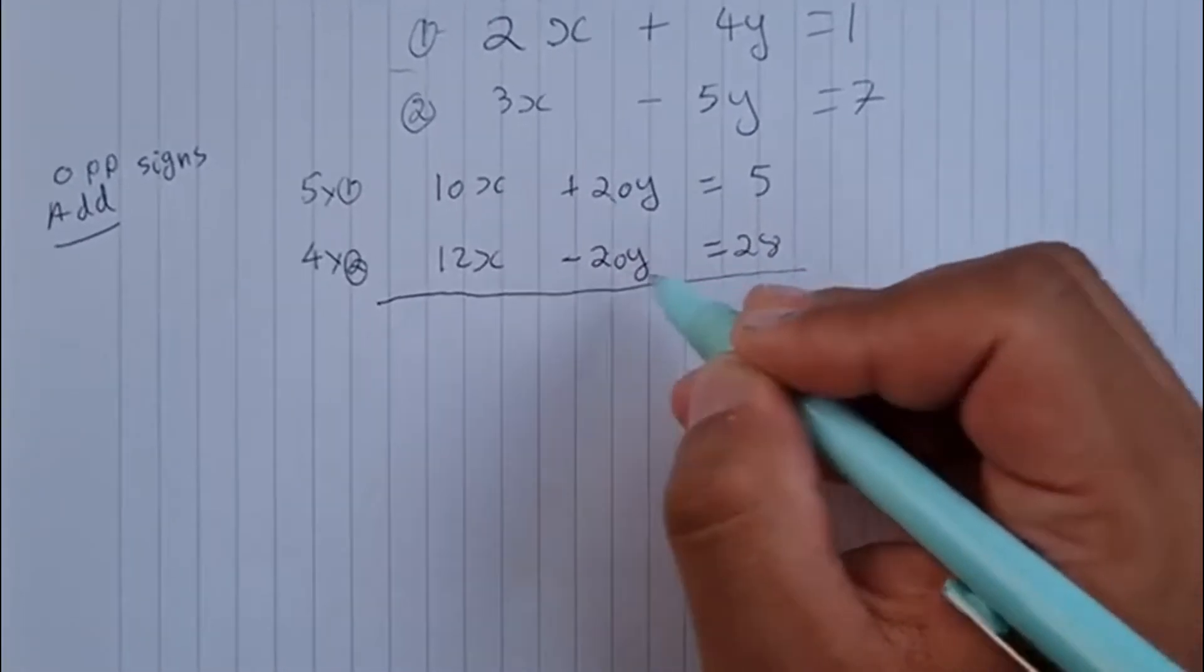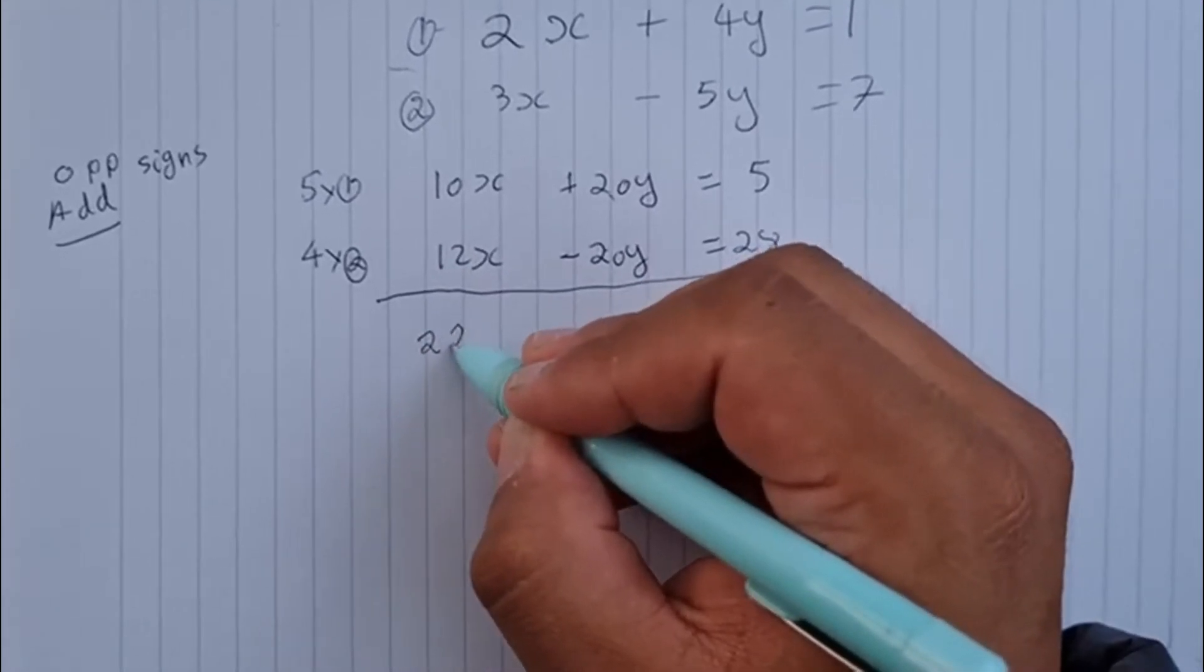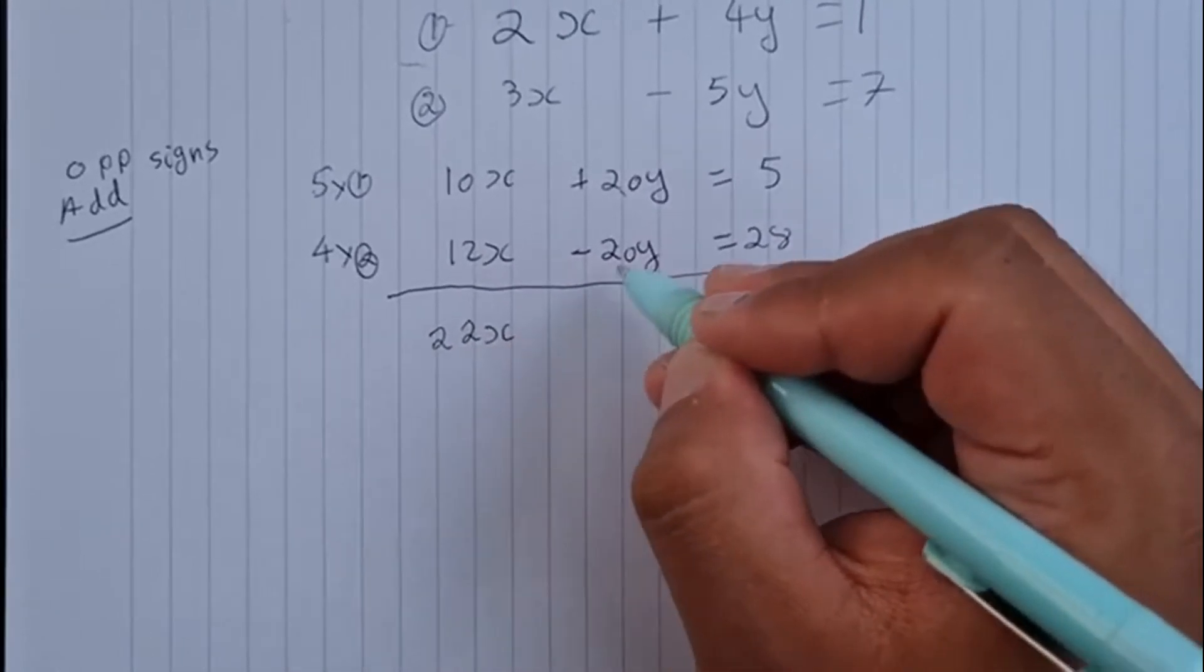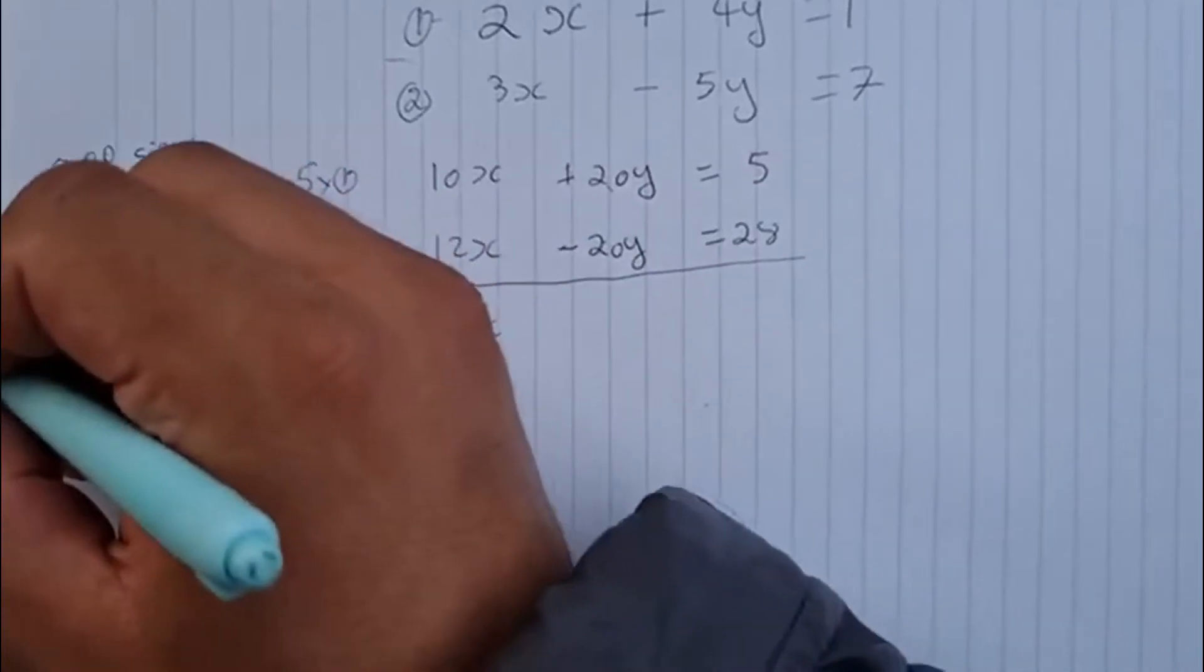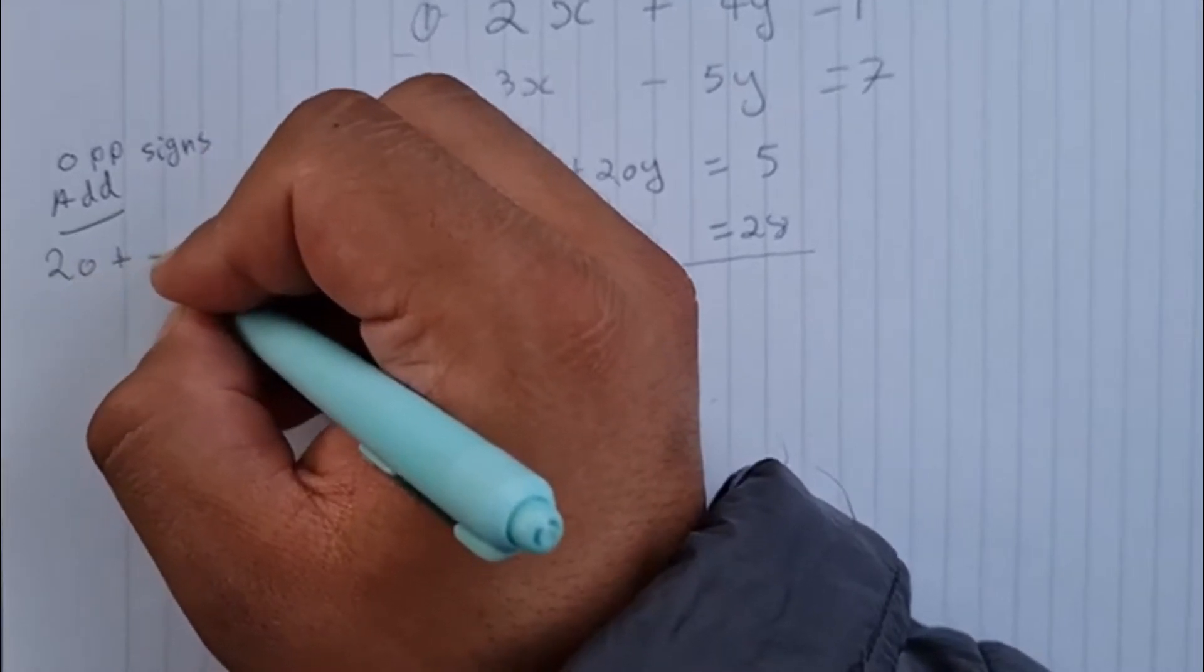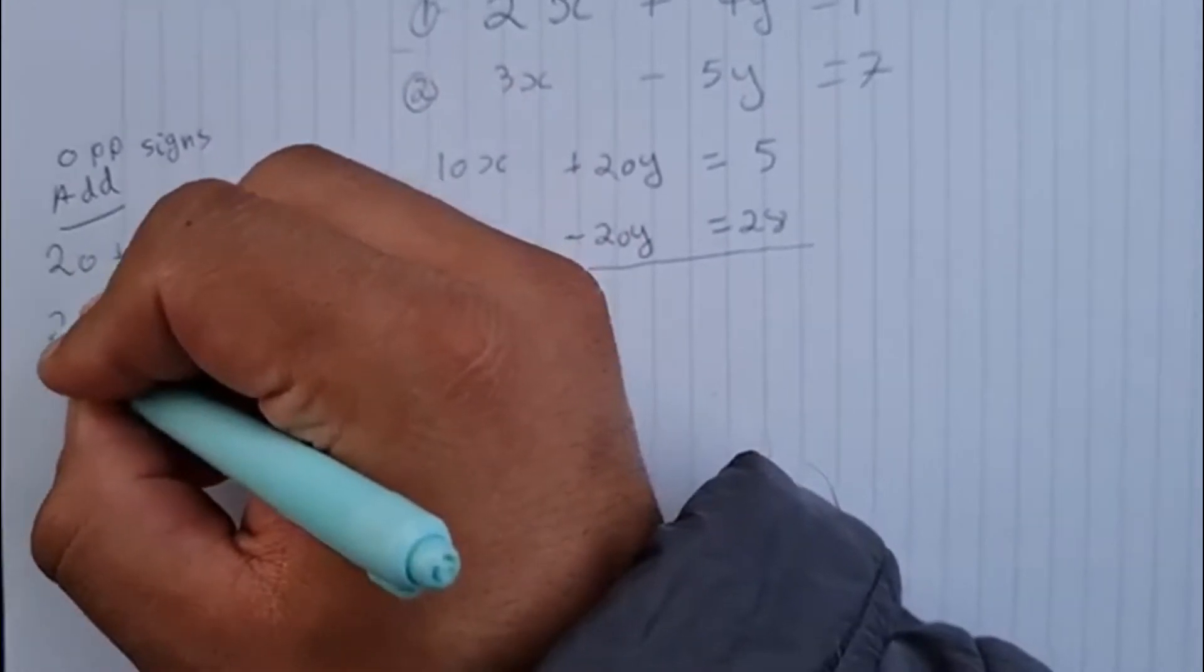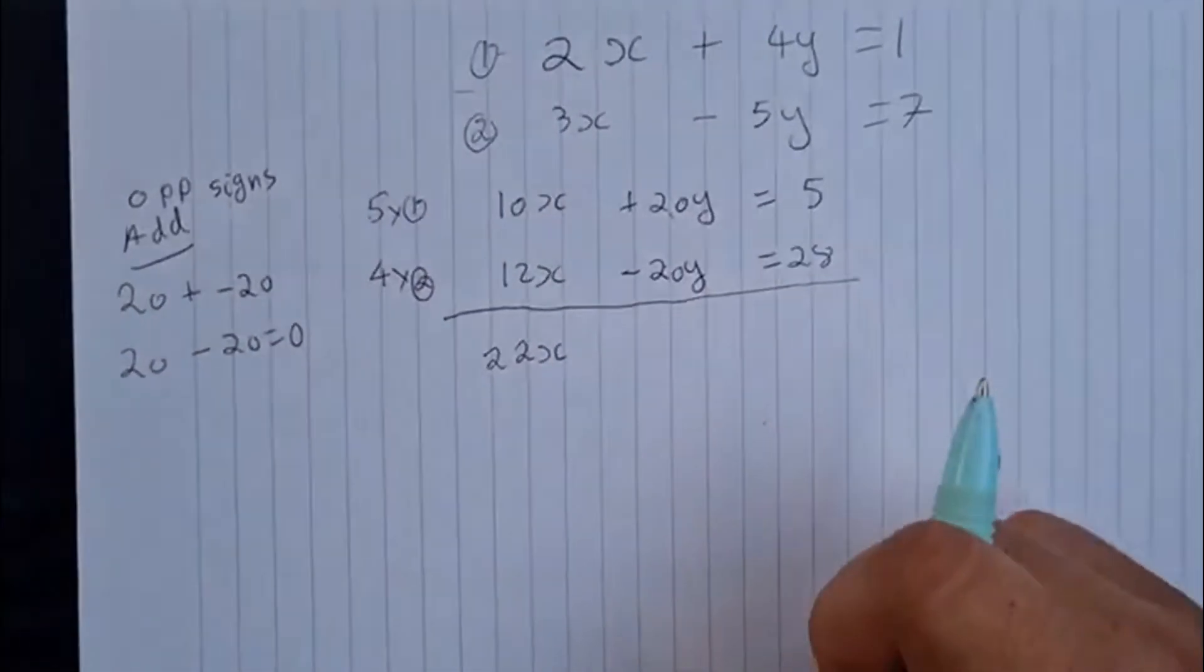So I'm going to add the equations that I've got. 10x plus 12x is going to be 22x. 20y plus minus 20y is just going to be 0y. And if you don't believe me, 20 plus minus 20 is the same as 20 take away 20, which is 0.